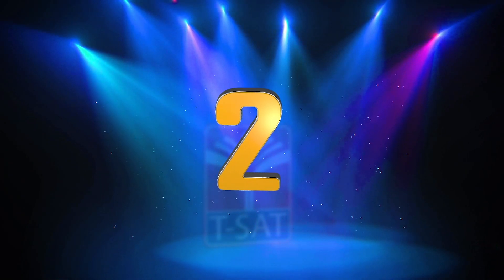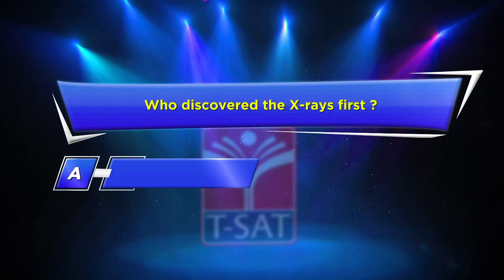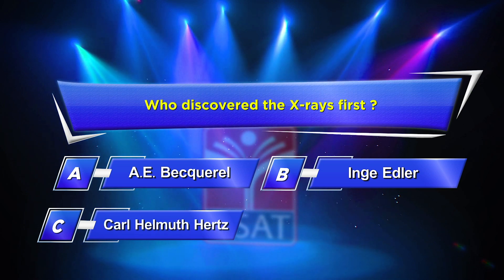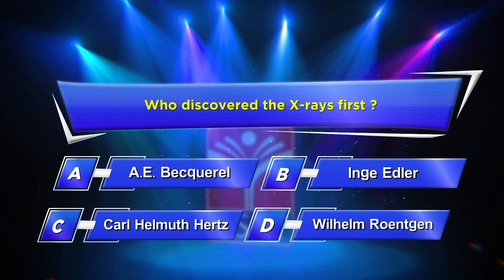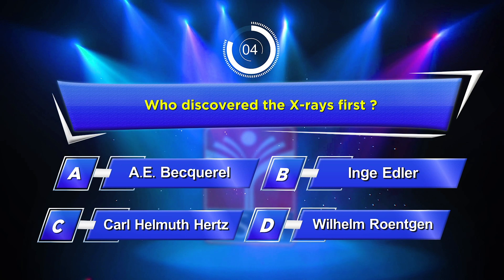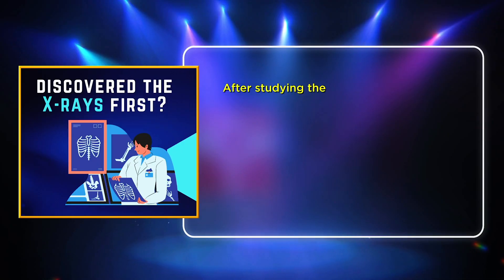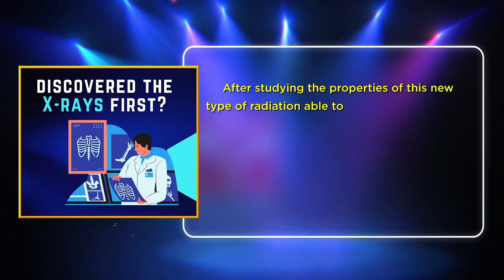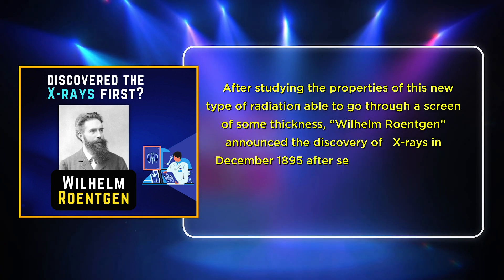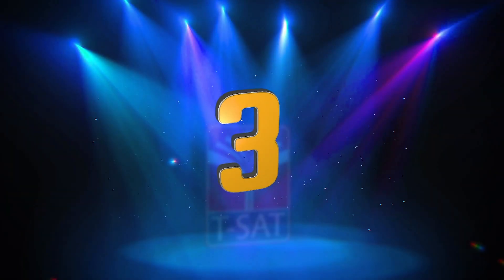Very interesting question about discoveries. Second question on your screen: who discovered X-rays first? Option A: A.E. Becquerel. Option B: Inch Edler. Option C: Karl Helmut Hertz. Option D: Wilhelm Roentgen. Your time starts now. The correct answer is Option D, Wilhelm Roentgen. After studying the properties of this new type of radiation able to go through a screen of some thickness, Wilhelm Roentgen announced the discovery of X-rays in December 1895 after seven weeks of hard work. He named them X-rays to underline the fact that their nature was unknown.